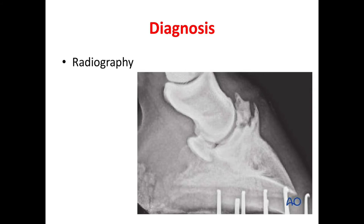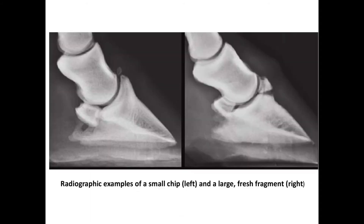How is this disease diagnosed? It is mainly by x-ray radiography. Here you can see an extensor process fracture very clearly in this x-ray. This is another picture showing radiographic examples of a small chip on the left side and a large fresh fragment on the right side, while the x-ray from the previous slide shows a much larger fractured fragment.